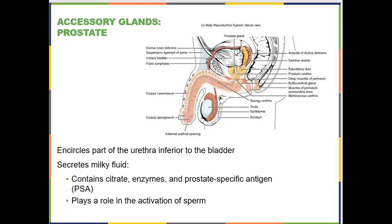Next we hit three of the male accessory reproductive glands, starting with the prostate — this yellow one here — which is usually about the size of a walnut. It secretes a milky fluid. What we are going to concentrate on is enzymes. These enzymes physiologically wake up the sperm. Even though the sperm have the ability to swim in the epididymis, they are generally quiescent there, and the enzymes in the prostatic fluid wake them up.